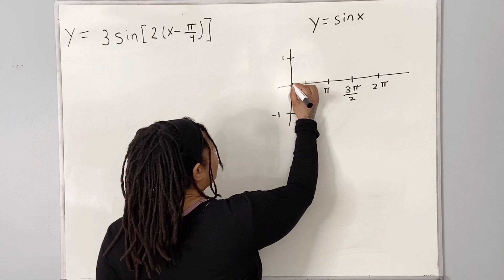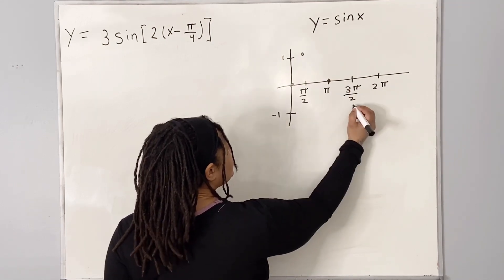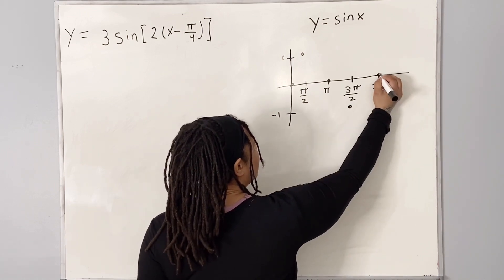Sine of 0 is 0, sine of pi over 2 is 1, sine of pi is 0, sine of 3 pi over 2 is negative 1, and sine of 2 pi is 0.